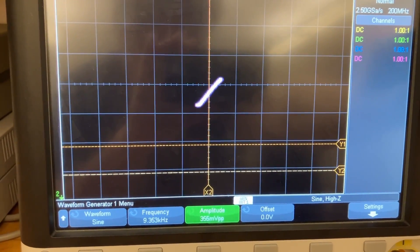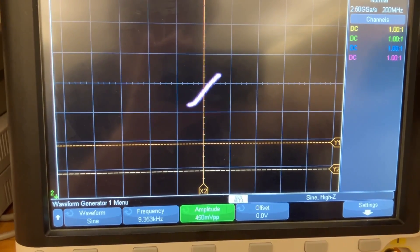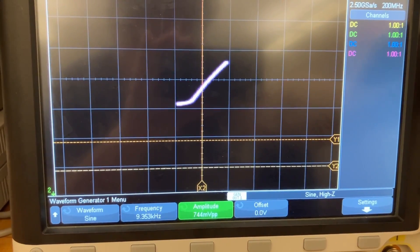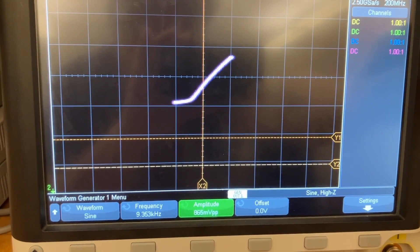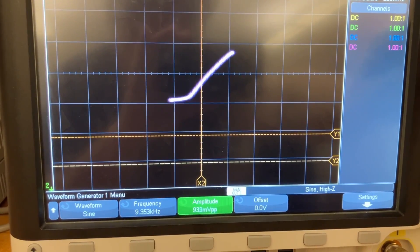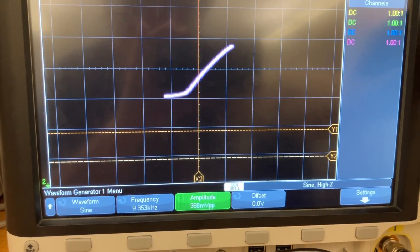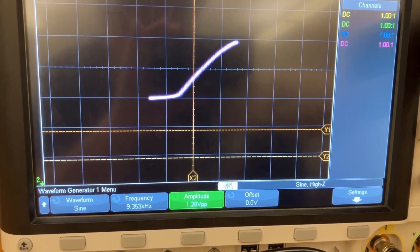And again, around 350, you see it start to curve at the bottom. And here, around 1-volt, you see it start to curve at the top. Somewhere around there.